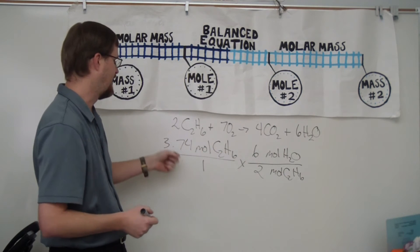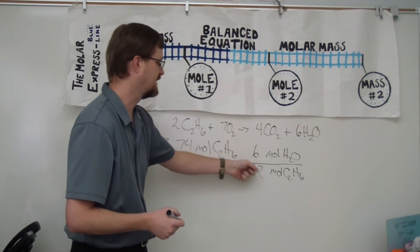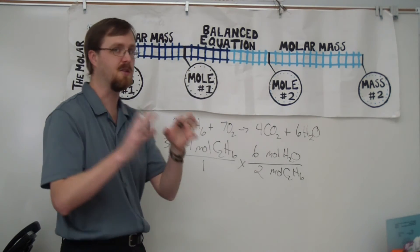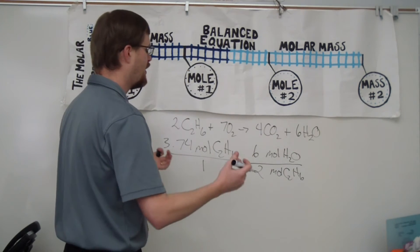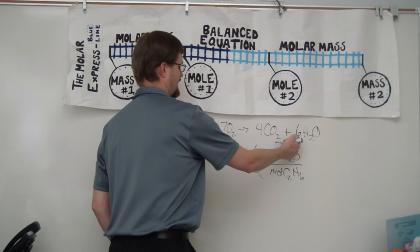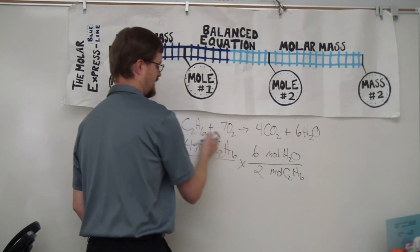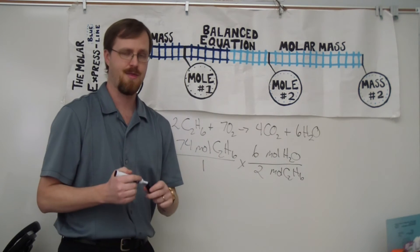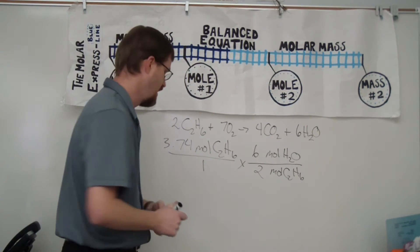And so then I'm going to multiply it, 3.74 times six divided by two. So when it says balanced equation here for the stoichiometry part, all you are doing is quite literally taking the numbers straight from the balanced equation and just plugging them in. That's stoichiometry.